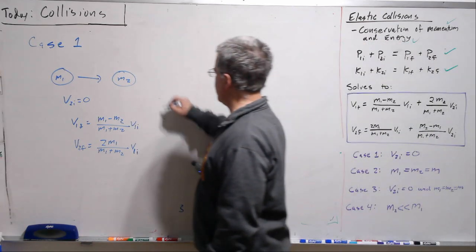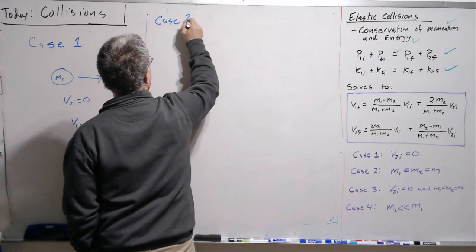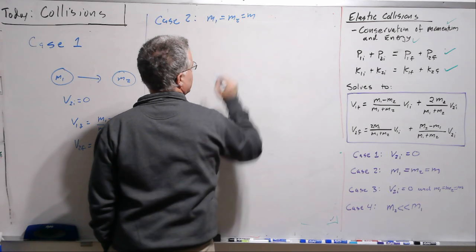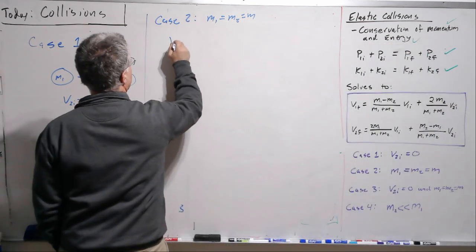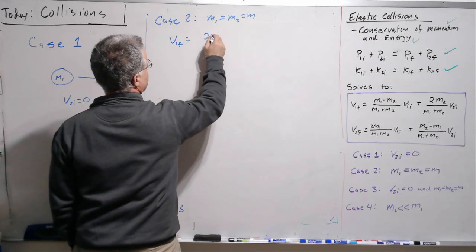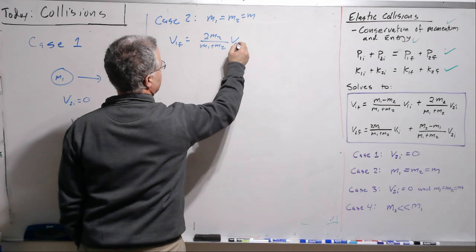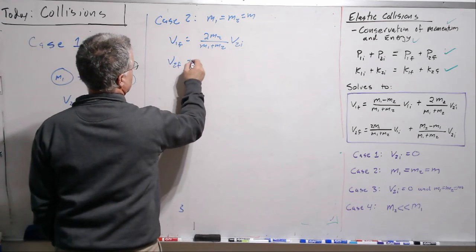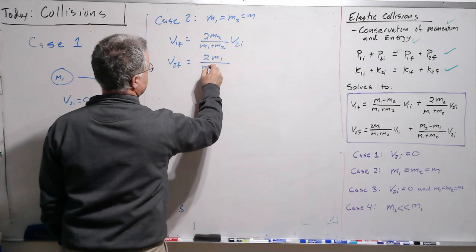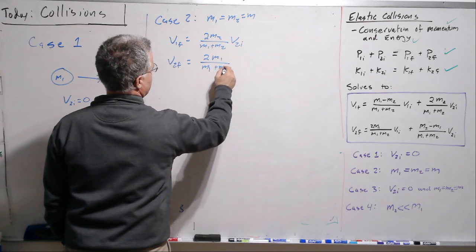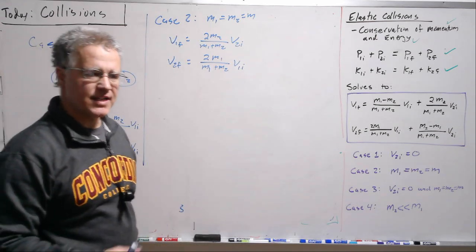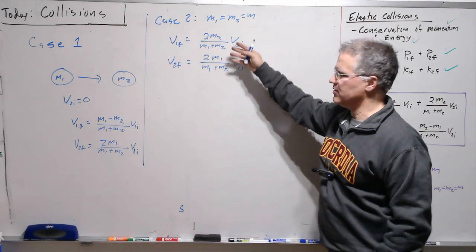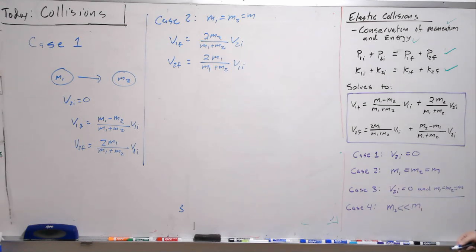All right. Let's look at this under the special case of case two. So now we're going to get these terms to cancel here. And so that's interesting. So V1 final only depends on V2 initial and vice versa. And so they sort of exchange velocities in a weighted way, a mass weighted way.